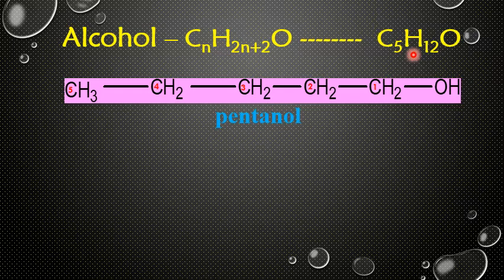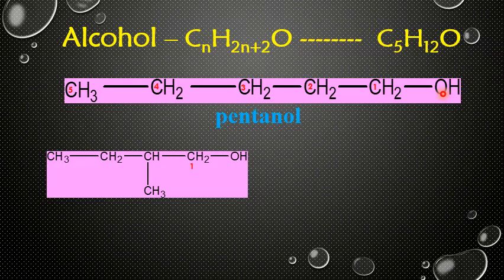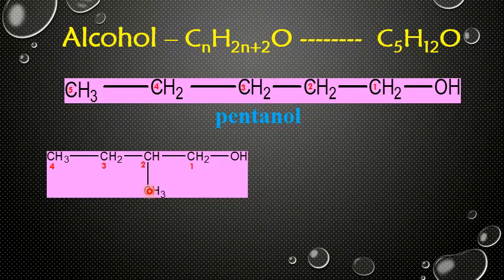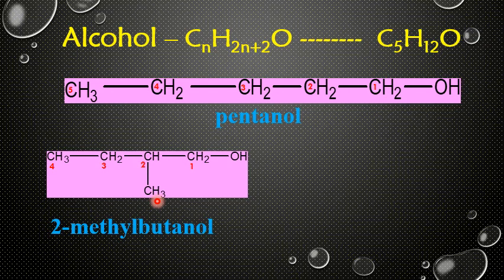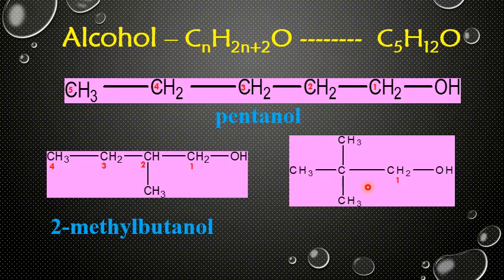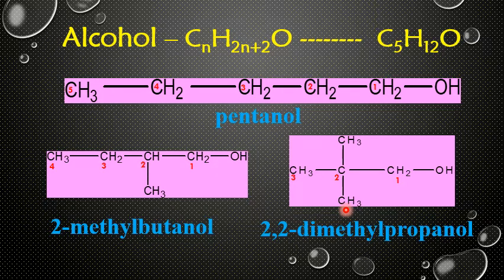If we draw a chain isomer for this primary alcohol, the OH group must be attached to the first carbon atom as in the original structure, but the length of the main carbon chain must be different. We can draw another primary alcohol by adding a methyl group to the second carbon atom, leaving only 4 carbon atoms in the main chain — named 2-methylbutanol. We can also attach another methyl group to the second carbon, reducing the main chain to 3 carbons, giving 2,2-dimethylpropanol.